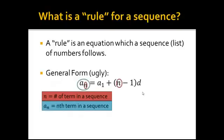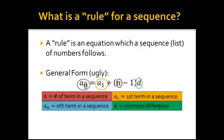a sub n means the nth term of a sequence. So whatever that 5th term is, whatever number that would be, that's what a sub n would be. Or a sub 5 rather. a sub 1 is the first term of a sequence. And d is our common difference. That's the thing we're adding or subtracting every time to get to the next term in the list.